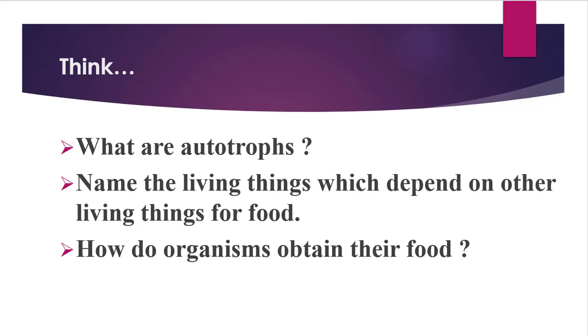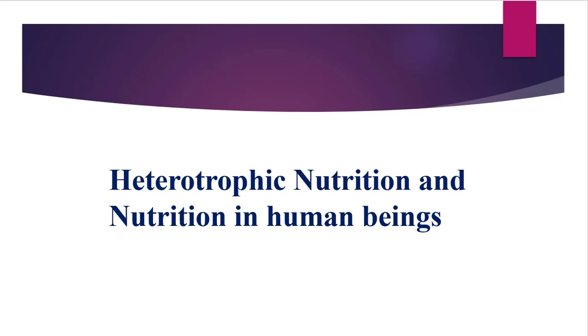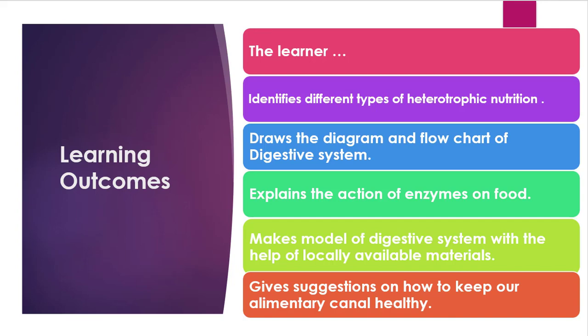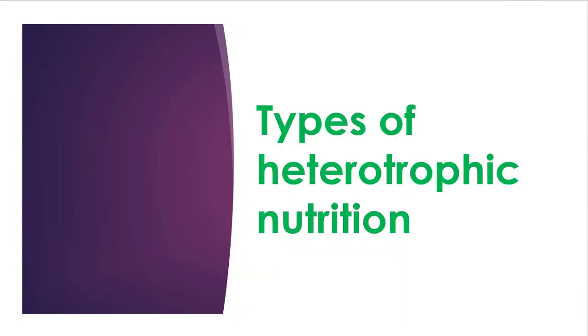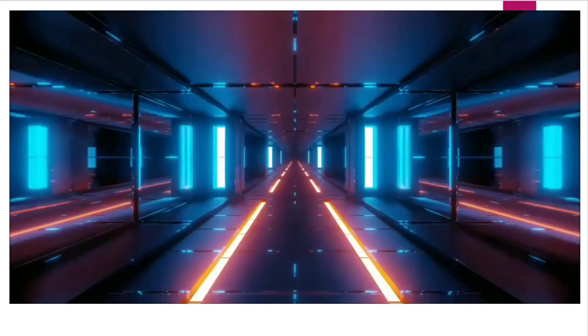Today in this lesson, we are going to learn about heterotrophic nutrition and nutrition in human beings. The learner is going to identify different types of heterotrophic nutrition, draw the diagram and flowchart of the digestive system, explain the action of enzymes on food, make a model of the digestive system with locally available materials, and give suggestions on how to keep our alimentary canal healthy. First, we will see the types of heterotrophic nutrition in this video.